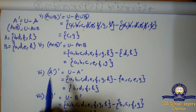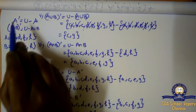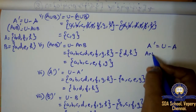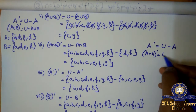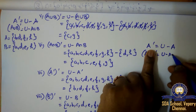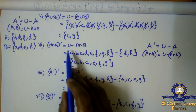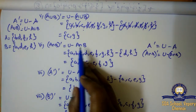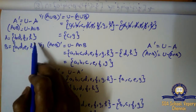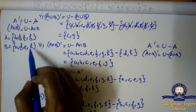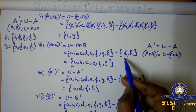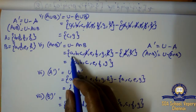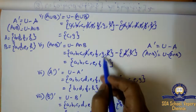Sixth subdivision: (A intersection B) whole dash equals U minus (A intersection B). A intersection B — looking at A is {B, D, F, H} and B is {A, D, E, H} — the common elements are D and H. So U minus {D, H}: U values A to H minus D and H. D and H get cancelled. Pending values: A, B, C, E, F, G.